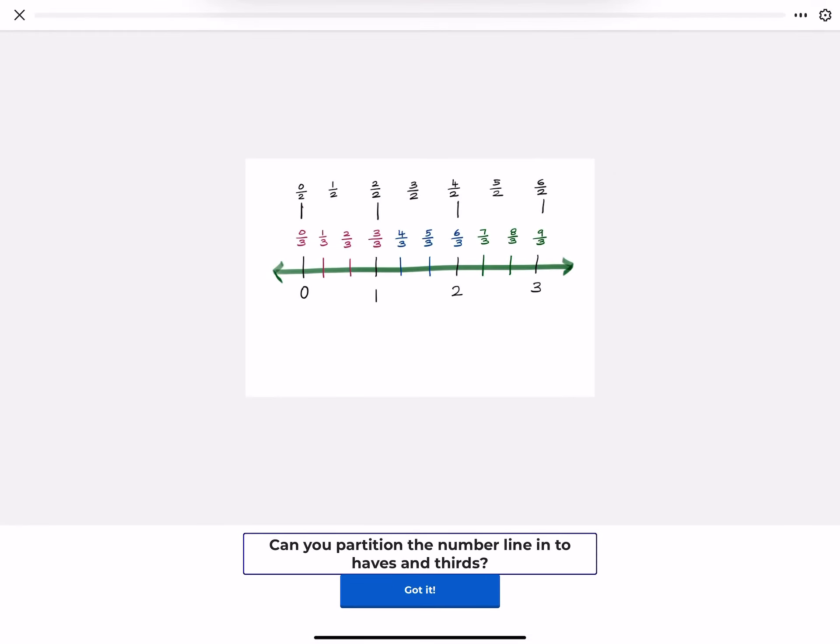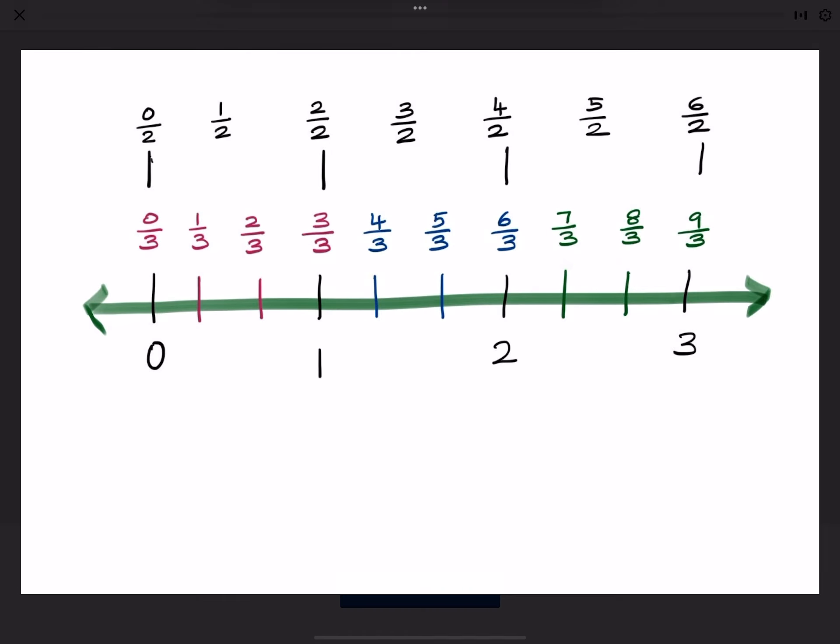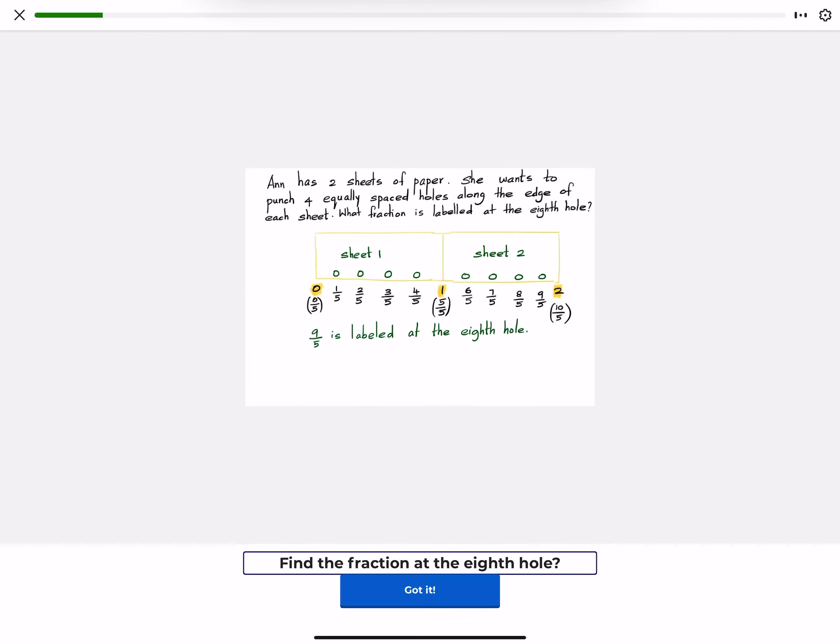Can you partition the number line into halves and thirds? Find the fraction at the eighth hole?